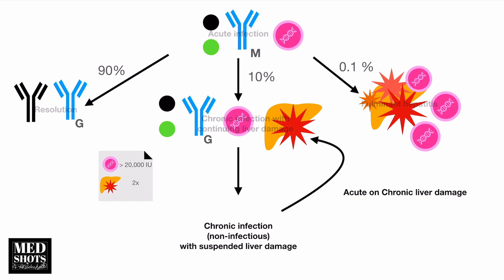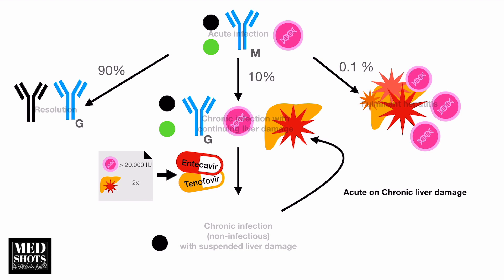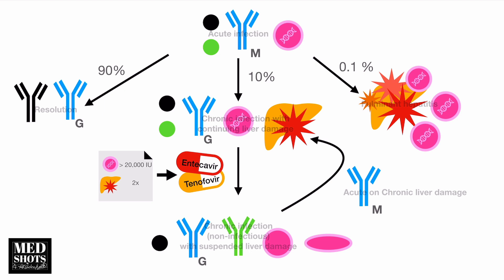With treatment — given when viremia is above 20,000 international units and liver enzymes are greater than two times elevated — we give tenofovir or entecavir. This causes HBsAg to remain (infection still present), HBeAg to disappear, and anti-HBe and anti-HBc IgG to appear with non-infective tubular forms. In acute and chronic damage without treatment, anti-HBc IgM reappears.